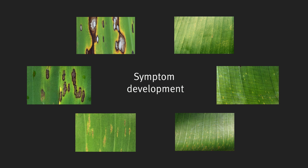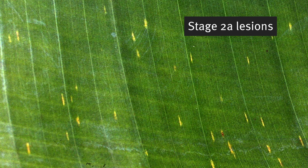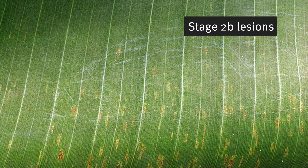Symptom development of yellow sigatoka can be broken up into five stages. Stage 1 is a narrow yellowish-green speck about 1 mm in length on the upper leaf surface. Stage 2a and 2b is when specks develop into streaks 3 to 4 mm long and 1 mm or less in width, running parallel to leaf veins.